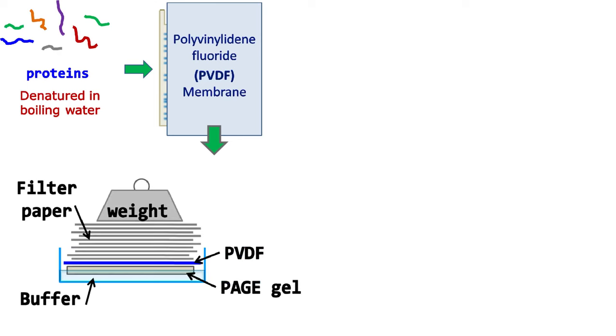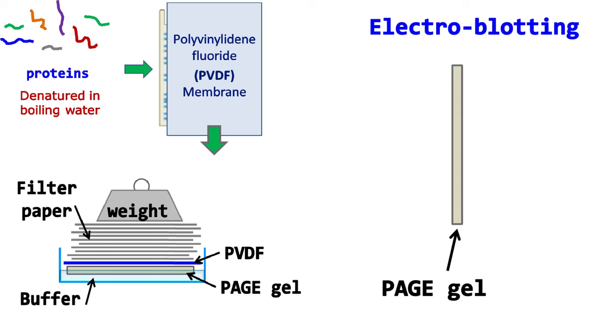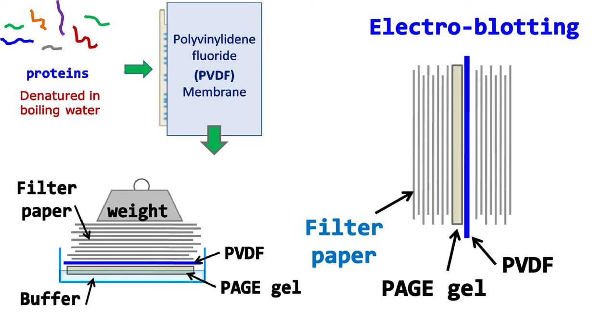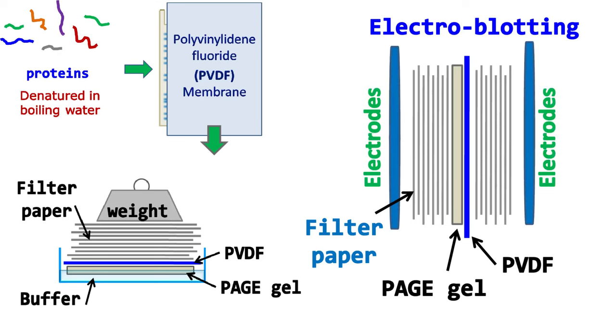The second method used for the transfer is electroblotting. In this method, the PVDF membrane is placed on the gel and sandwiched between filter papers. This whole set is then transferred to an electrophoresis tank. When the electric field is applied, the proteins move towards the positively charged electrodes and get transferred to the membrane.